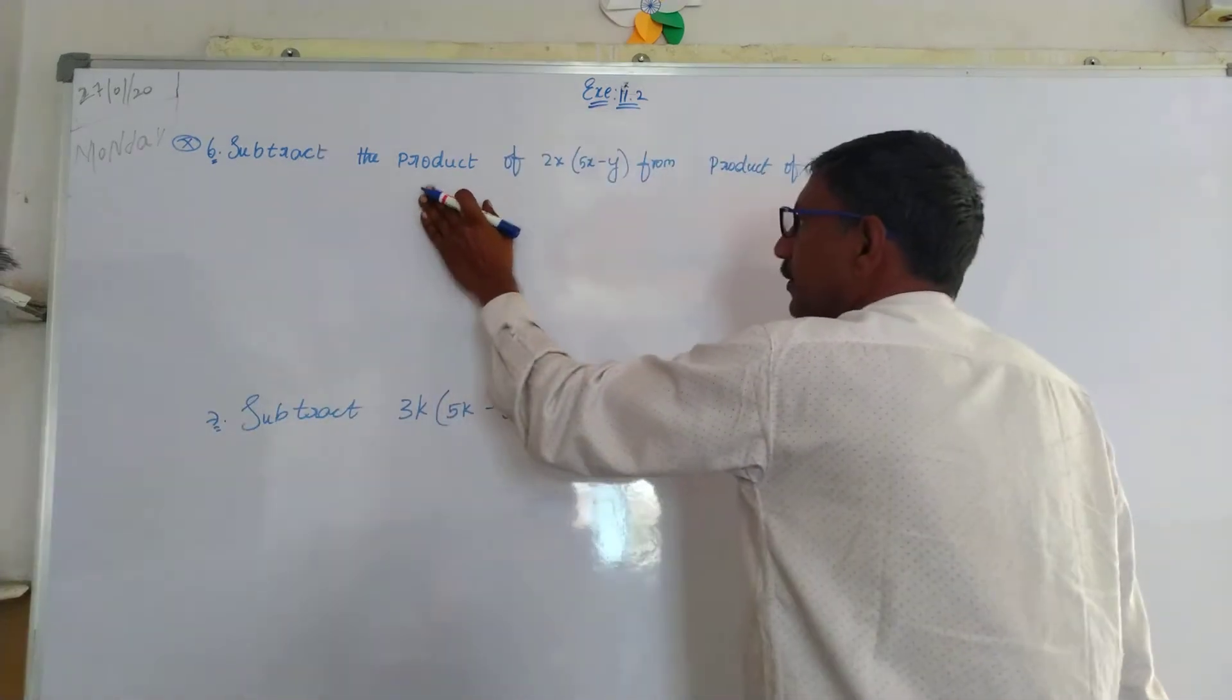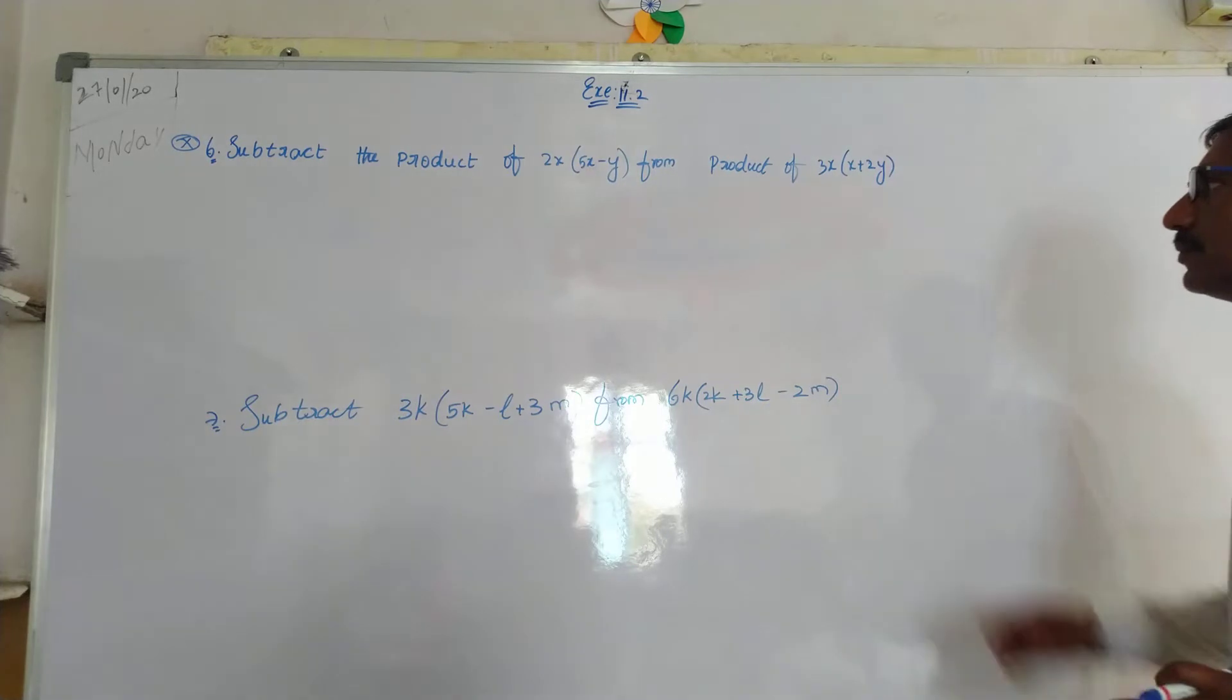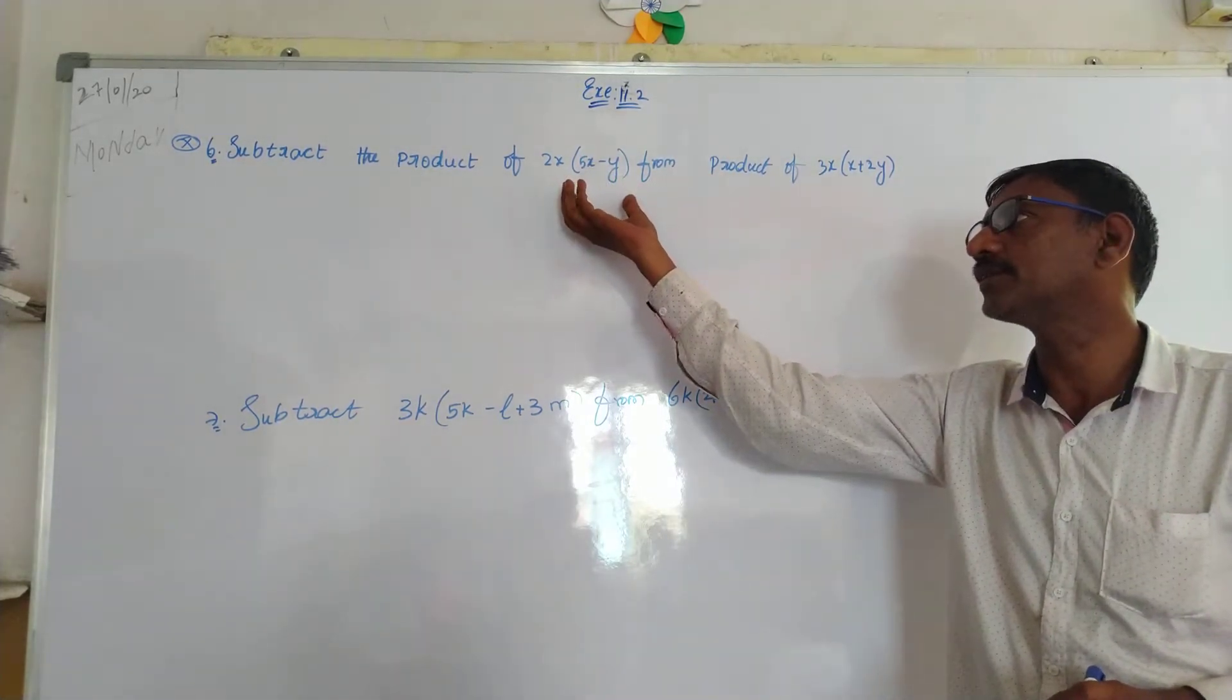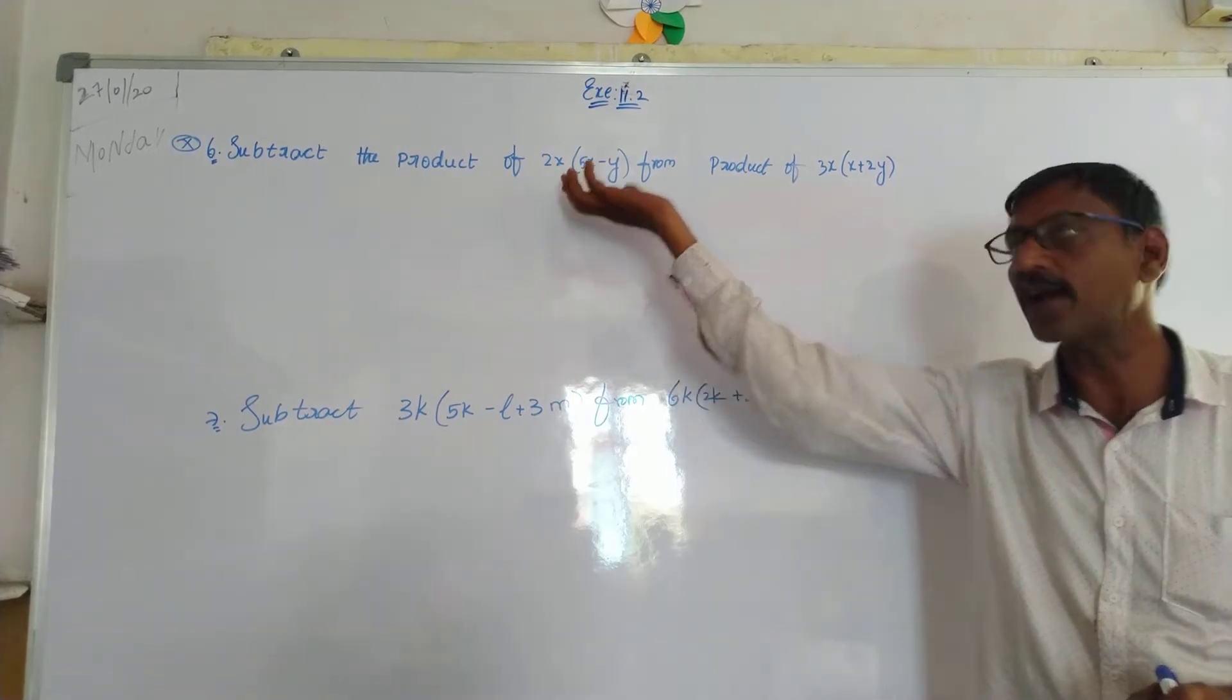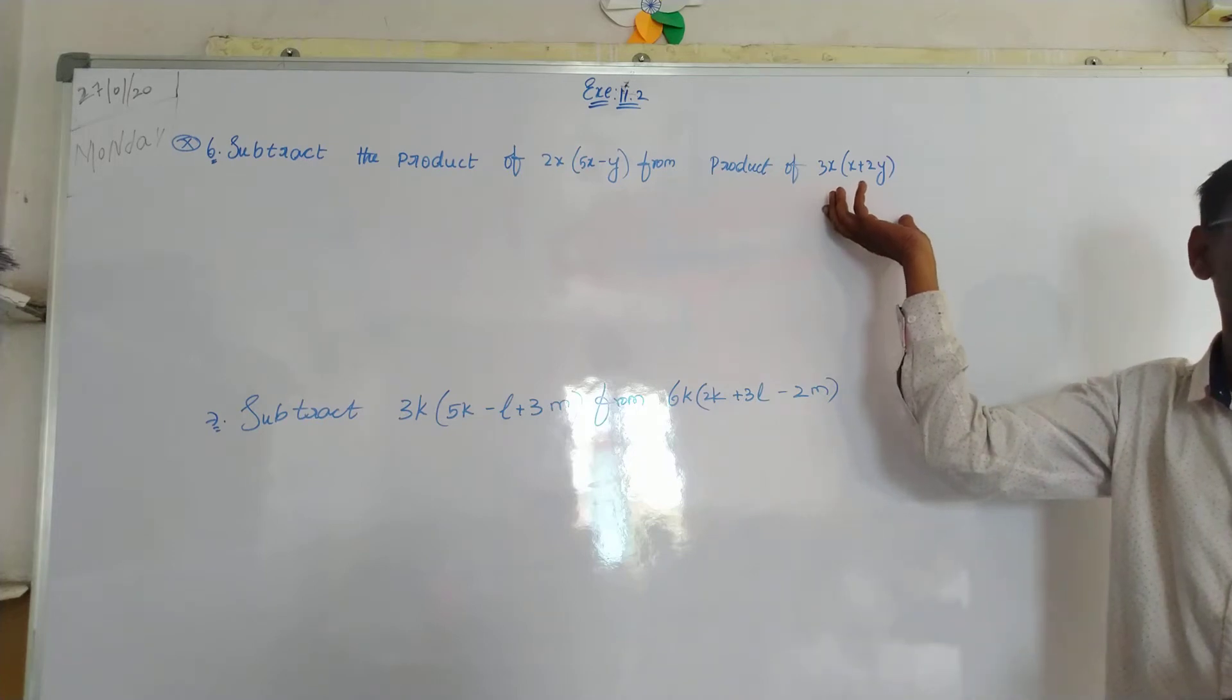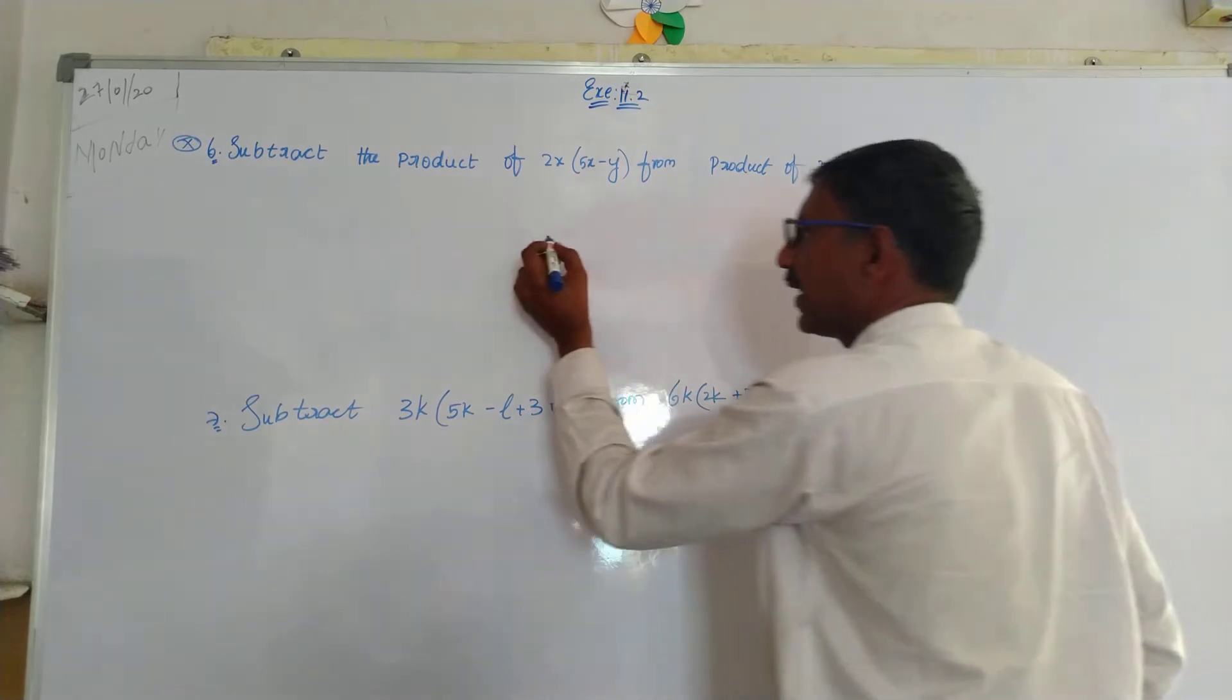Subtract the product from this product. 2x into 5x minus y is subtracted from 3x into x plus 2y.